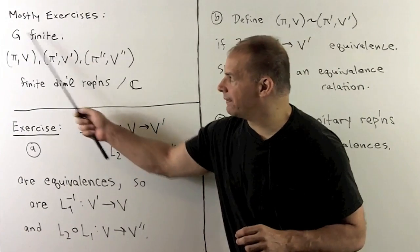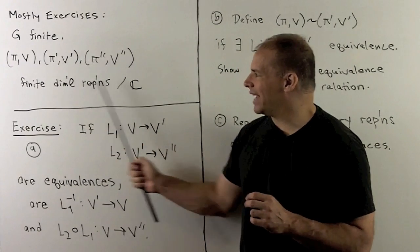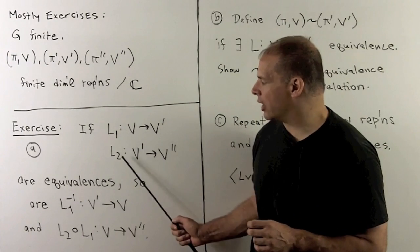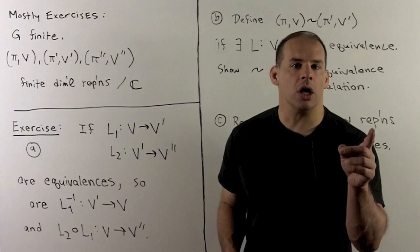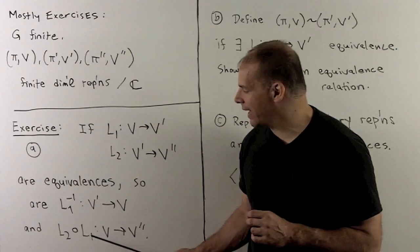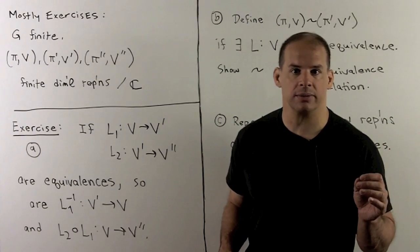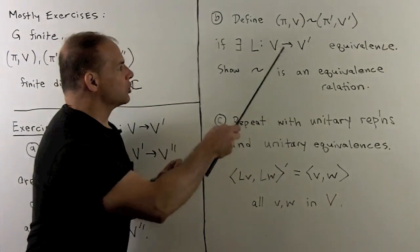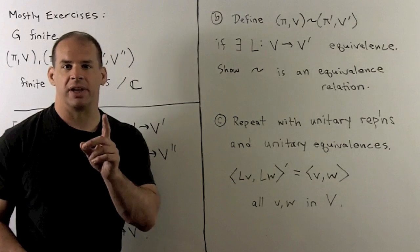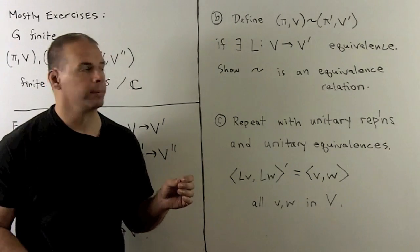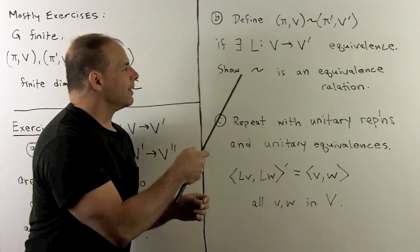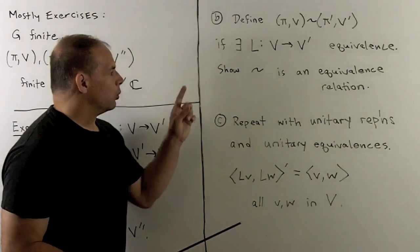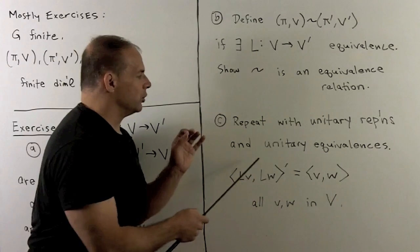Recall we're working with a finite group and we're going to consider finite dimensional representations over the complex numbers. First exercise: if I have L1 and L2 equivalences, we'll show that L1 inverse and the composition of L2 with L1 are also equivalences. Then once we have that, we're going to define an equivalence relation between representations — pi and pi prime are equivalent if we can find an equivalence between them. We'll show this is an equivalence relation. Then we'll repeat all that with an equivalence relation on unitary representations and unitary equivalences.